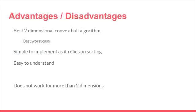Some advantages and disadvantages of Graham Scan are that it is the best two-dimensional worst case convex hull algorithm. It is very simple to understand as it relies on sorting as well as implement. Its main disadvantage is that it does not work for more than two dimensions.